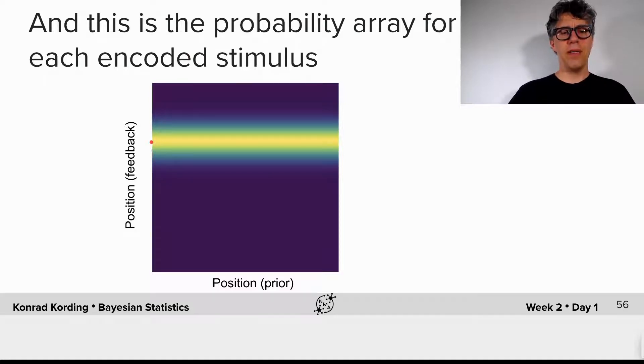So here's the result. If the actual stimulus is here, then we will have a distribution over x tilde of the potential encoded stimuli as they enter the brain.